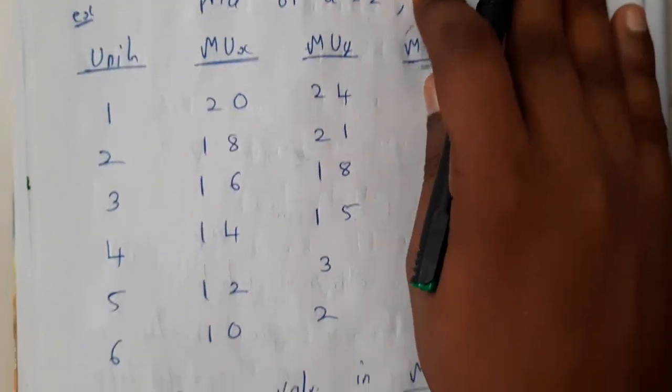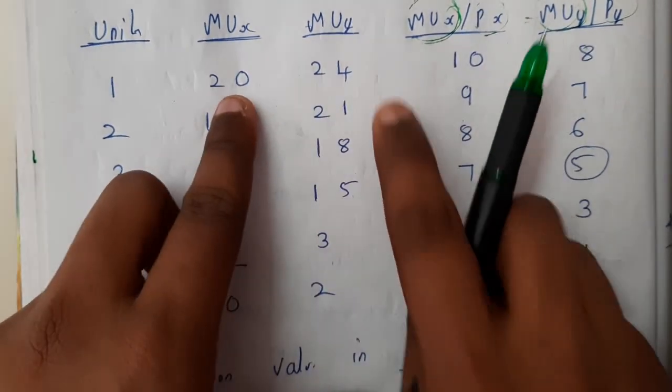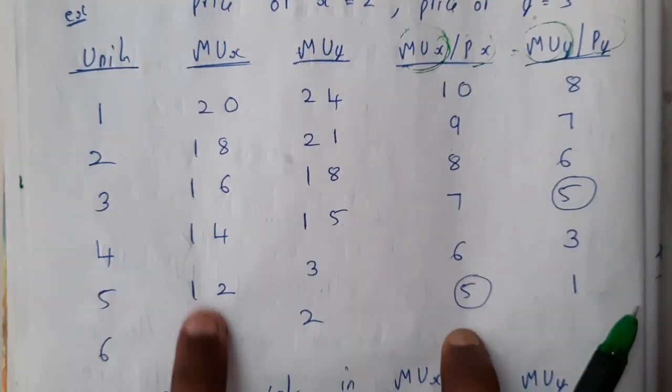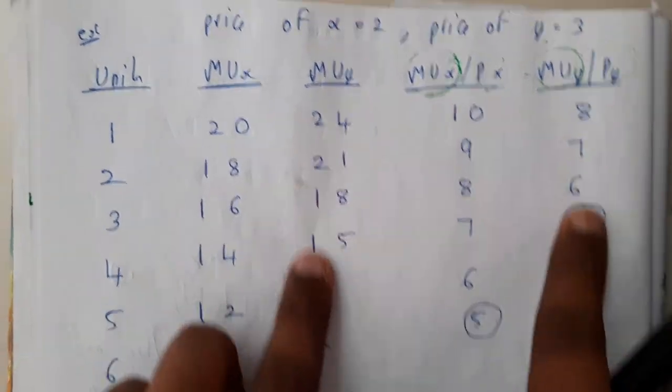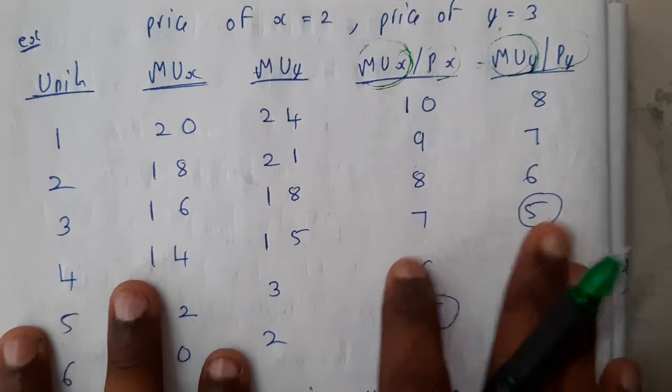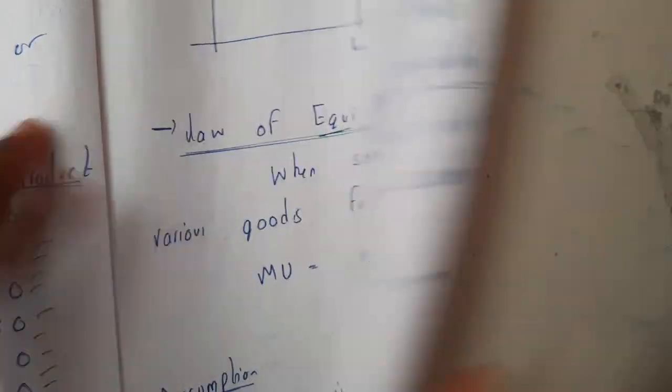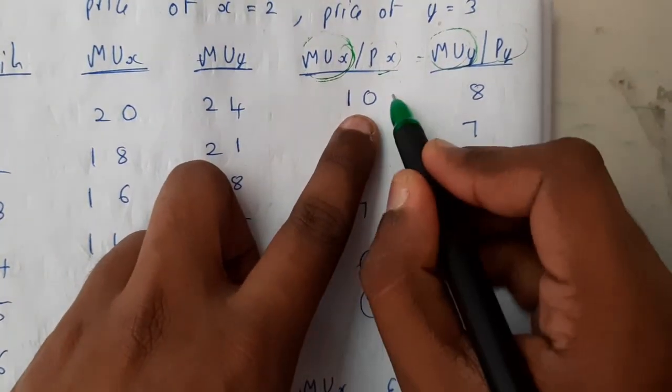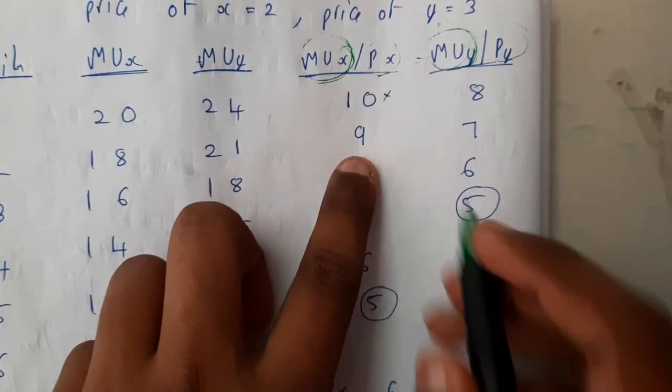You'll be dividing by 2 and getting these values. Similarly, dividing by 2 and dividing by 3, you'll get these values. Once you're done, check for equi-marginal utility - it should be equal. Check whether 10 is there? No, draw a cross mark. 9? Not there.